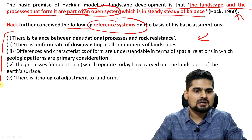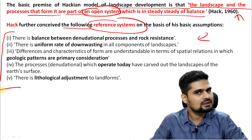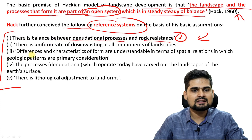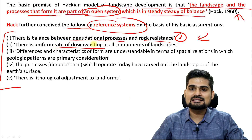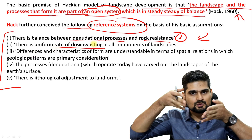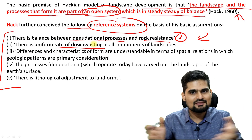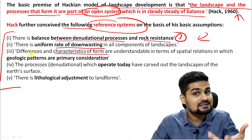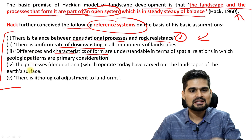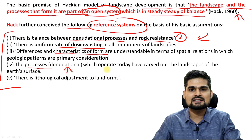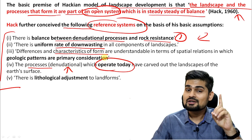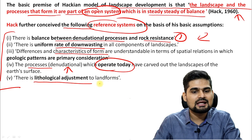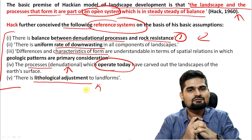You can stop the video and note down these five assumptions. First, the balance between denudational processes and rock resistance. Second, a uniform rate of downwasting or backwasting — that is, vertical erosion as well as horizontal or sideways erosion. Third, differences in characteristics of form, meaning various kinds of geological patterns and shapes. Fourth, the denudational processes which operate not in the past but in the present. And fifth, the lithological adjustment to those processes and to the landforms.